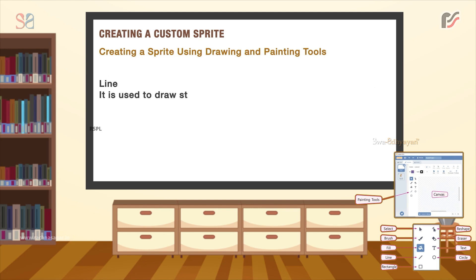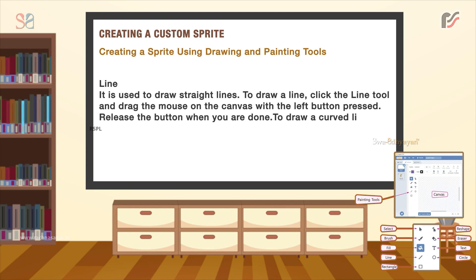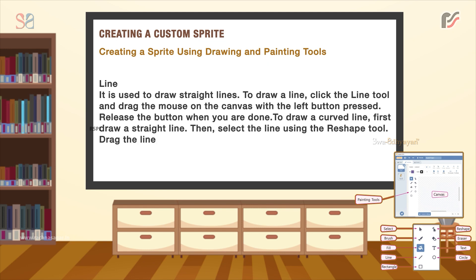The Line tool is used to draw straight lines. To draw a line, click the line tool and drag the mouse on the canvas with the left button pressed. Release the button when you are done. To draw a curved line, first draw a straight line, then select the line using the reshape tool. Drag the line using a point on it to get a curved line.